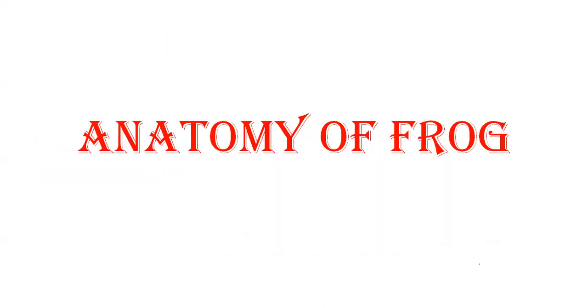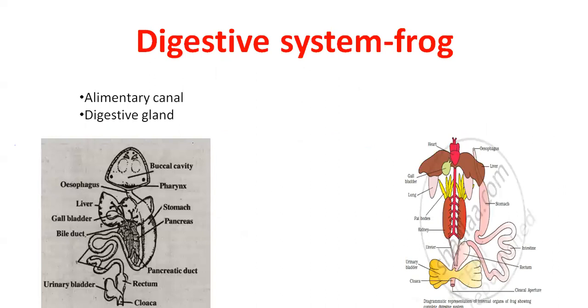Next is anatomy. In anatomy, first we talk about the digestive system. Their digestive system have two parts: elementary canal and digestive gland. Frog elementary canal is short because they are carnivores. Their elementary canal starts from mouth.